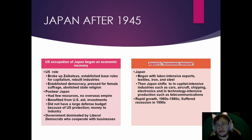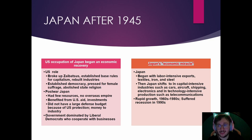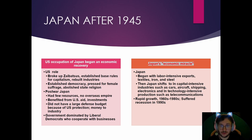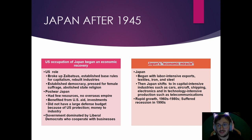There is a big economic event you need to know about: the Japanese Economic Miracle. The Japanese economy boomed and became the second largest economy in the world, even after being nearly wiped out during World War II. The Japanese economy first began with labor-intensive exports — textiles, iron, and steel. Then Japan shifted to more capital-intensive investment industries like electronics, cars, aircraft, shipping, phones, and computers.